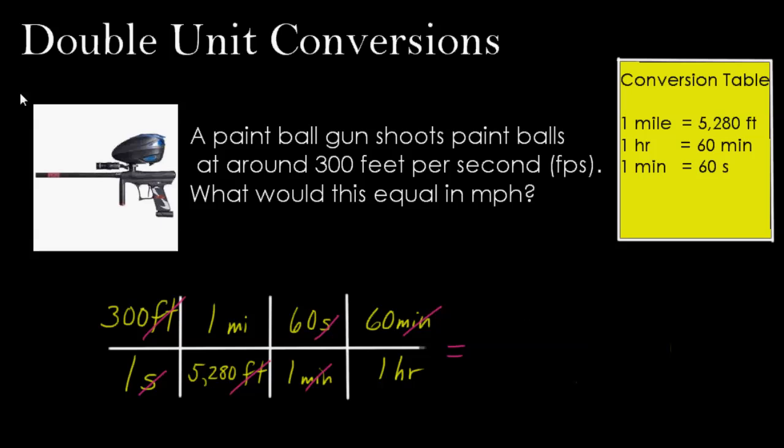204.5 miles per hour. And there's our solution. You can see using this, I was able to go from that gun shoots these paintballs at 300 feet per second to how fast is that in miles per hour - that's over 200 miles per hour. That's coming pretty fast out of that paintball gun.